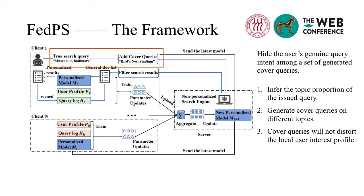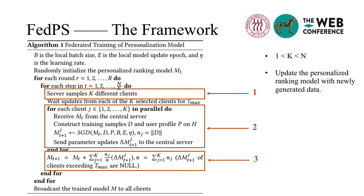We first train a topic model on the whole document set to infer the topic of the issued query. Then cover queries are generated on different topics. Different from recording cover queries into the search log, we just add cover queries when submitting the query to the search engine and filter those fake queries locally. Therefore, the user profile in our framework will not be influenced by cover queries.